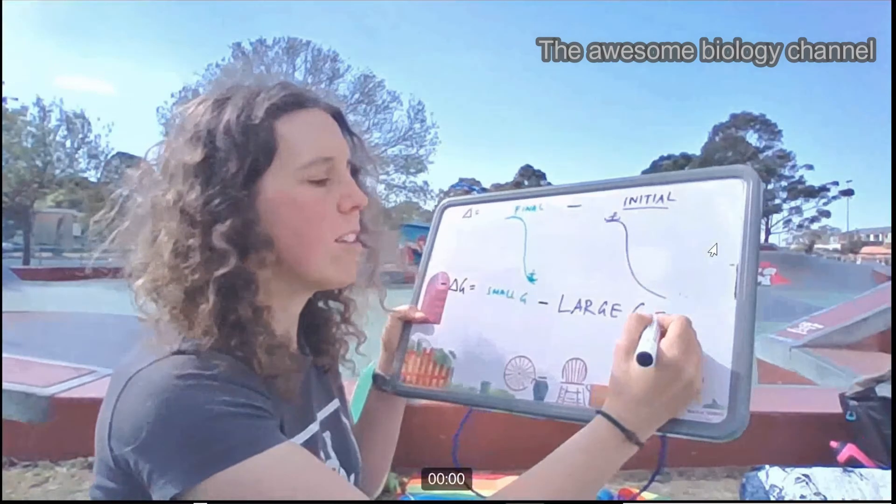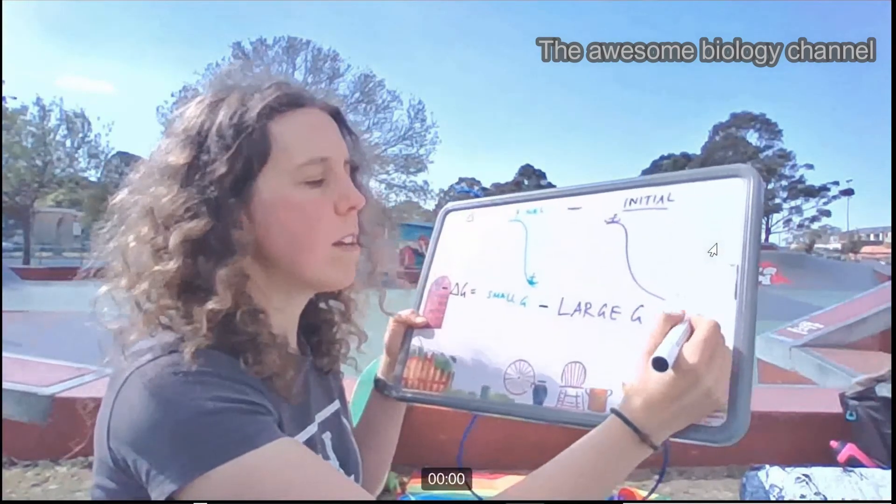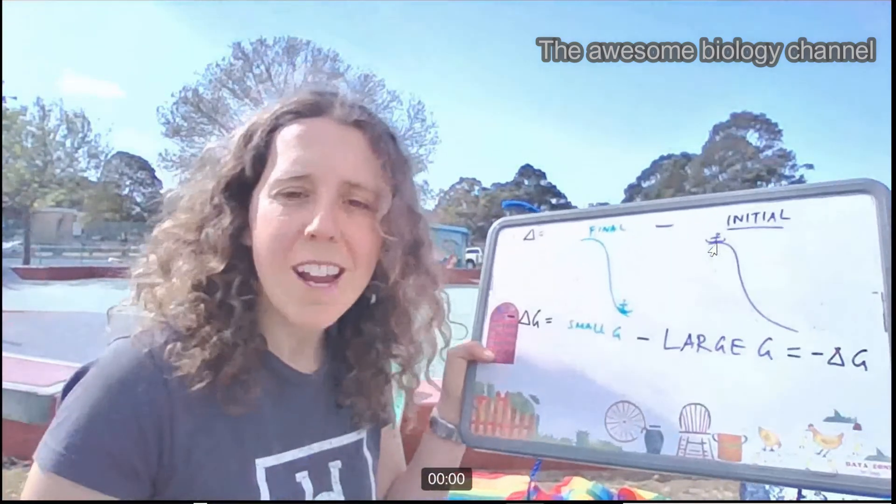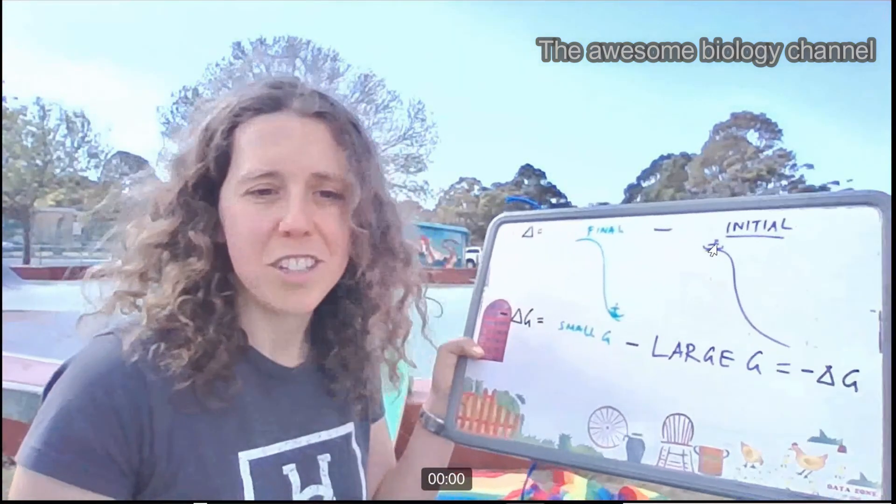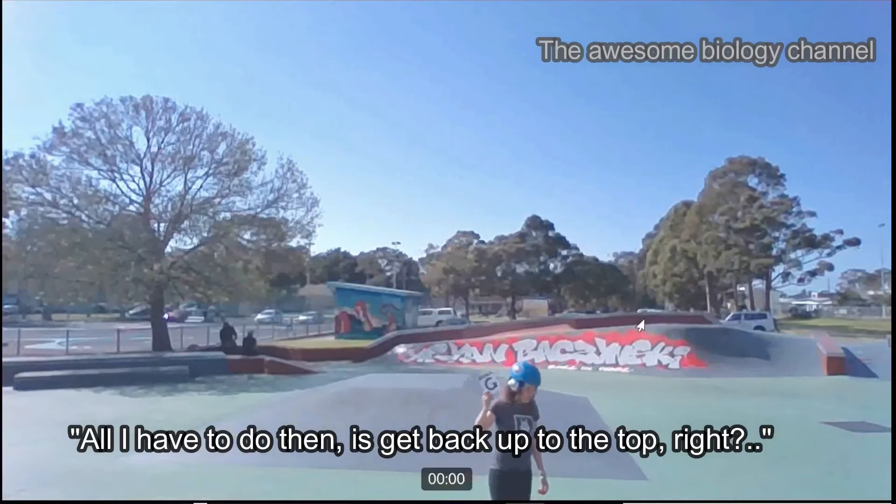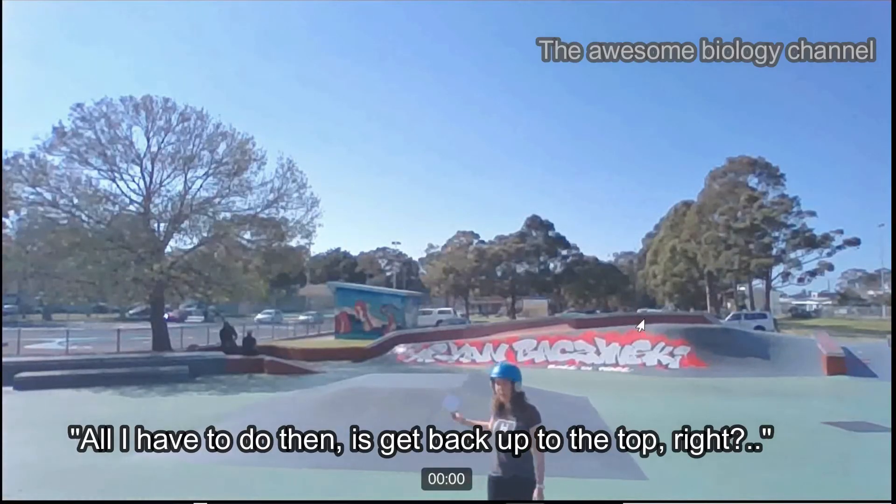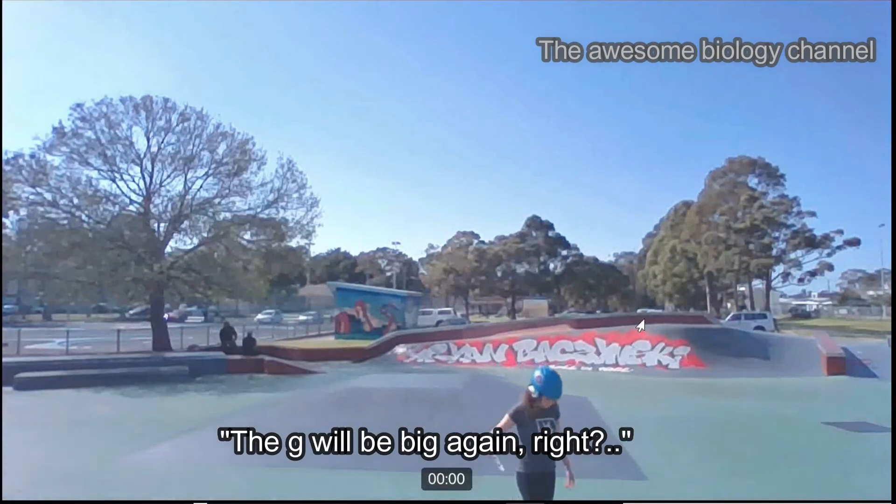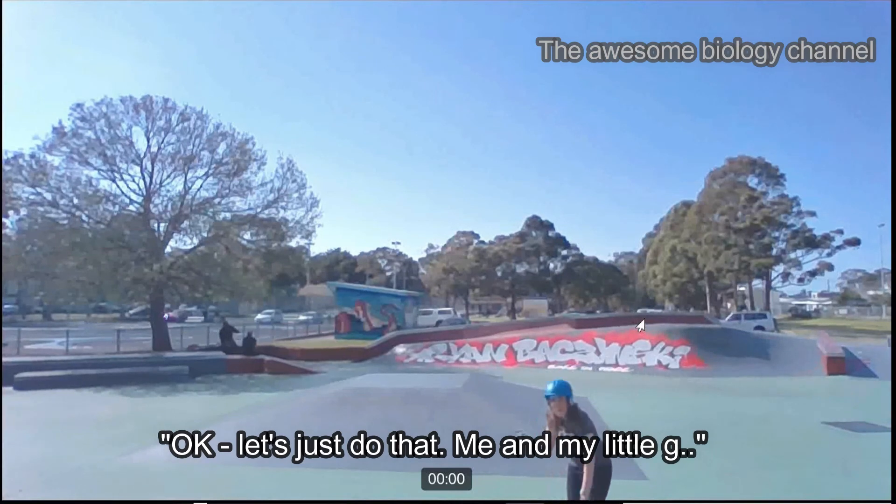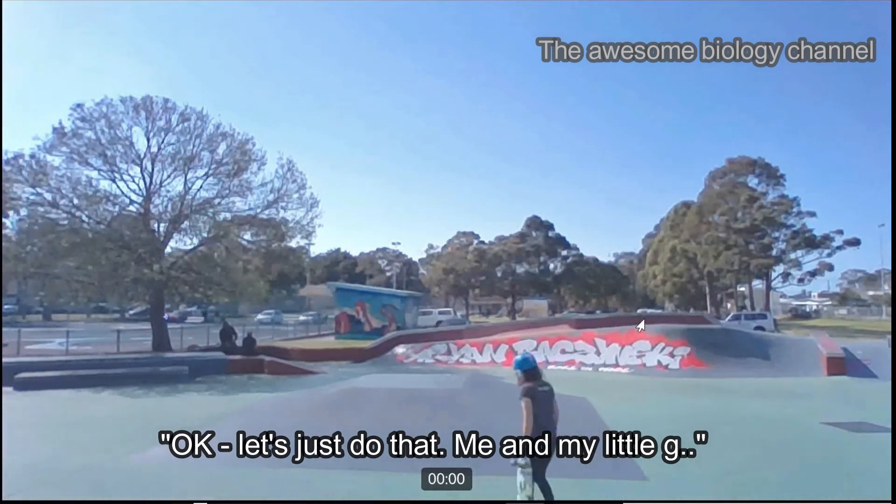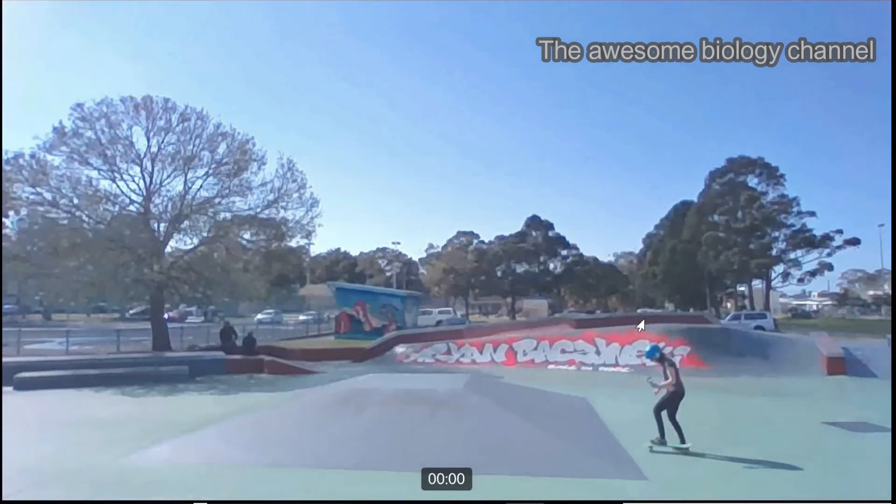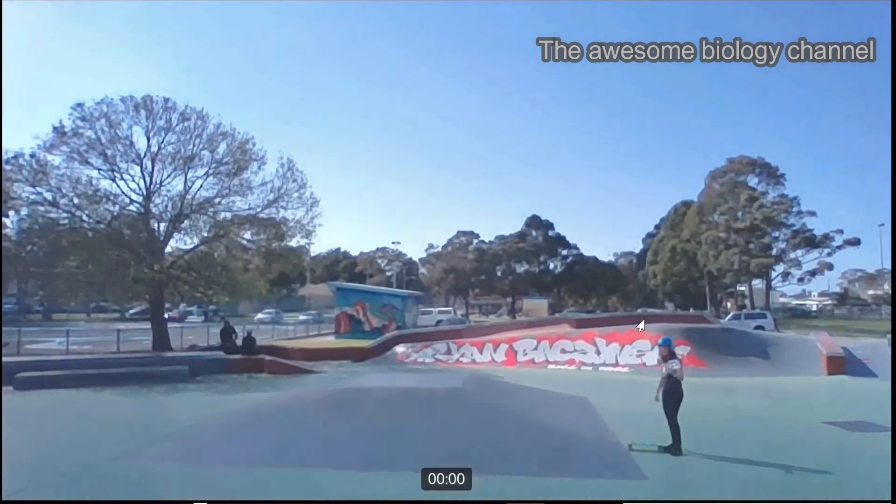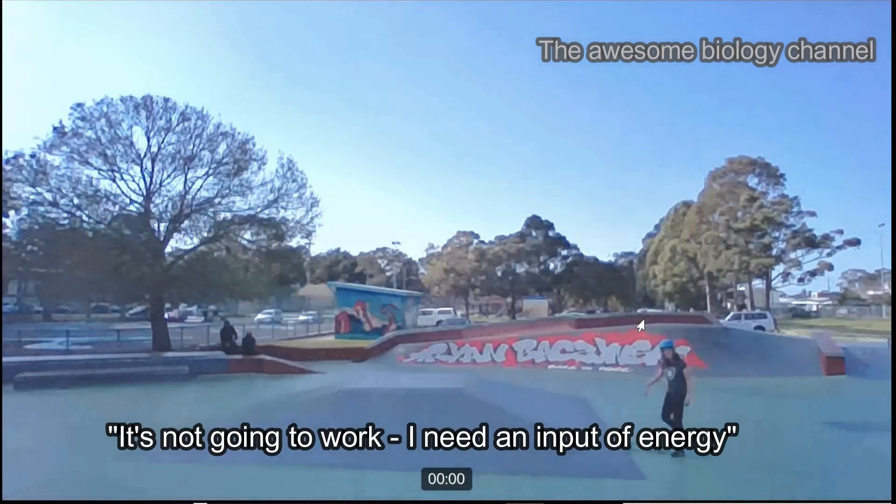I'm just going to do that on the other side as well, just to show you. Negative delta G. And what that means, right, is that that reaction was spontaneous. It released energy. All I've got to do then is get back up to the top, right? The G will be big again, right? Okay. Let's just do that. Me and my little G here. It's not going to work.